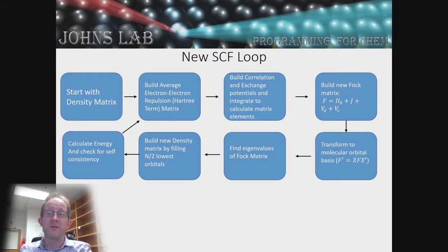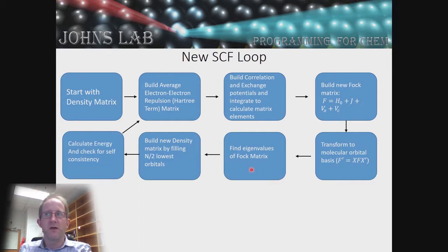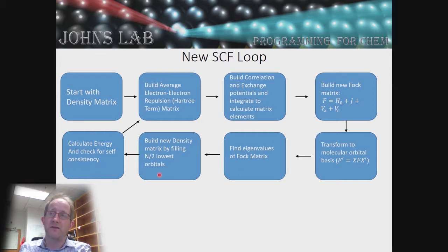Here's the new SCF loop: we start with our density matrix, build the average electron-electron repulsion term just like in Hartree-Fock, then build the correlation and exchange potentials and integrate over them to calculate the matrix elements. We build a new Fock matrix equal to the initial Hamiltonian plus electrostatic repulsion plus exchange potential plus correlation potential, transform to a molecular orbital basis, find eigenvalues, build a new density matrix by filling the N/2 lowest orbitals, calculate energies, and check for self-consistency. We repeat until the energy and density stop changing.